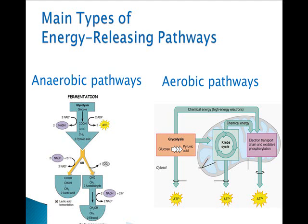Every cell begins its energy-releasing pathways with the process of glycolysis. Remember, 'lysis' means to break apart, 'glyco' refers to glucose — so it's breaking apart glucose. This occurs in the cytoplasm regardless of what pathway we're on, and it can produce two molecules of pyruvate and two net molecules of ATP. Aerobic respiration yields 36 total ATPs typically, whereas fermentation or anaerobic pathways only produce two net ATPs.